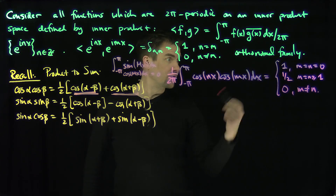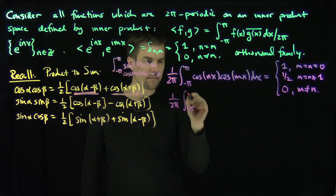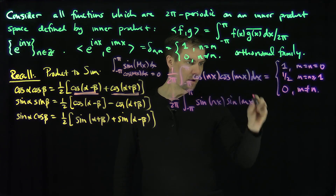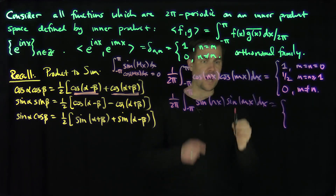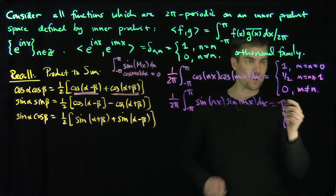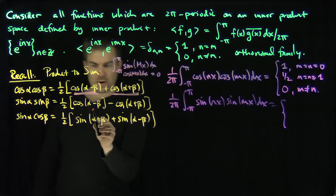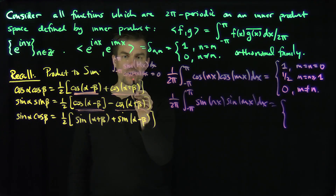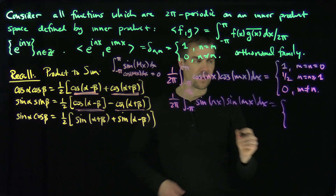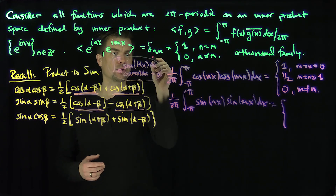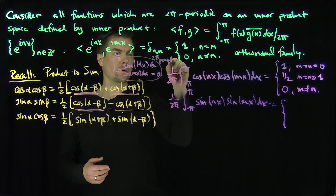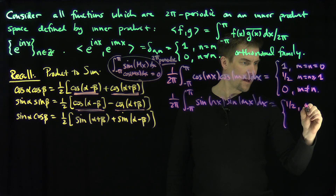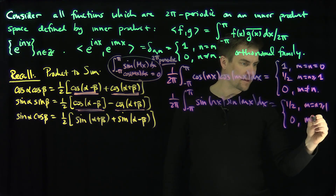The same thing happens with sine, except when m = n = 0, sine is 0, so there's nothing. For m = n ≥ 1, by similar reasoning, the first term gives 1, and the second term integrates to a sine which is 2π-periodic and gives 0. So the sine-sine inner product is 1/2 if m = n ≥ 1, and 0 if m ≠ n.